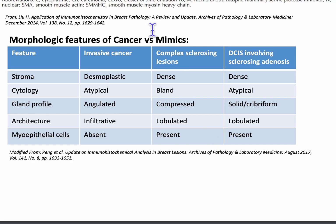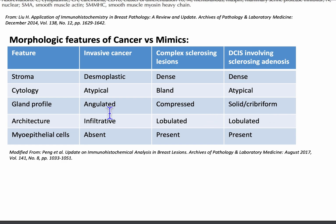Let's talk about the morphologic features of breast cancer and its mimics — specifically invasive carcinoma, complex sclerosing lesions, and DCIS involving sclerosing adenosis. In the stroma, invasive carcinoma will have a desmoplastic response, whereas the other two entities will have a dense stroma. The cytology for invasive cancer and DCIS involving sclerosing adenosis will be atypical, while complex sclerosing lesion will be bland. The gland profile for invasive cancer is angulated; complex sclerosing lesion shows compressed glands; and DCIS will be solid or cribriform. The architecture of invasive cancer is infiltrative; complex sclerosing lesions and DCIS involving sclerosing adenosis are lobulated. And lastly, myoepithelial cells are absent in invasive cancer, whereas they are present in both DCIS and complex sclerosing lesions.